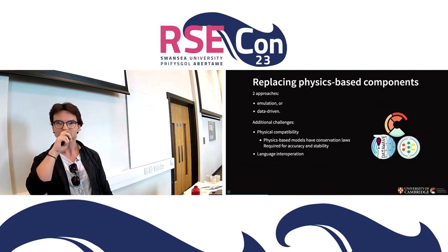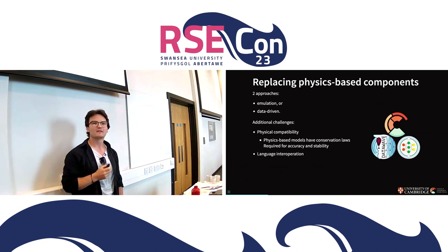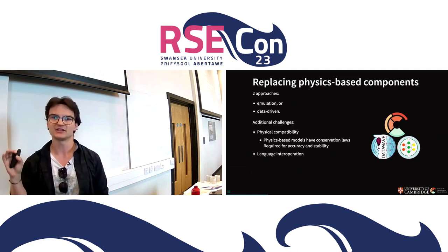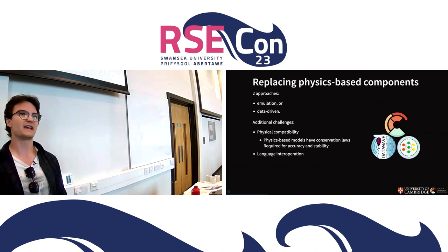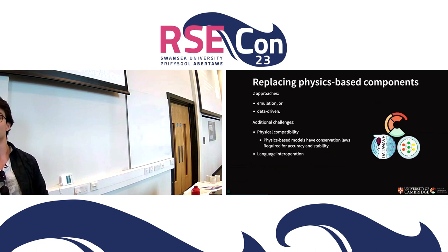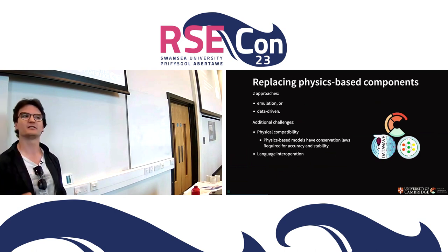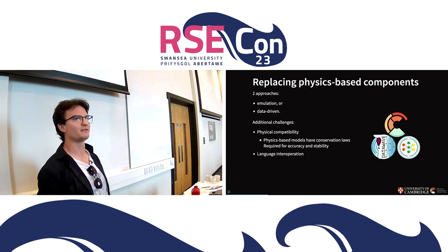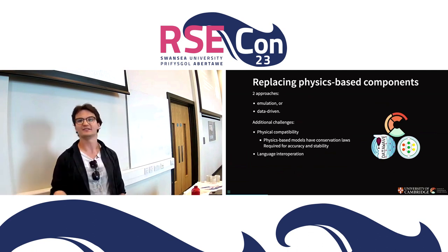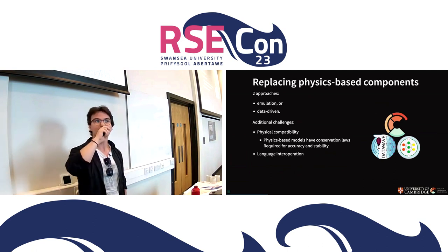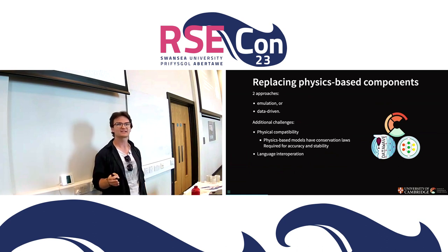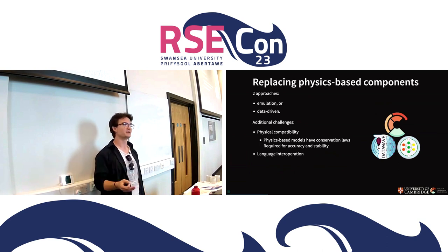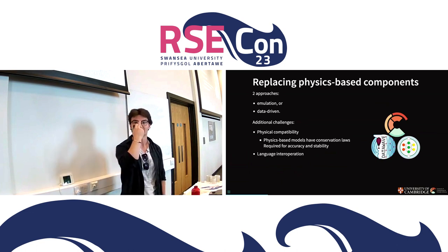That brings with it, alongside traditional machine learning challenges, a few extra ones we've spotted. When groups are trying to replace one particular component, there are often two things they're trying to do. Either they're trying to emulate an existing physics-based scheme — if we can take very heavy computation in, say, radiation or convection and code it into a neural net and run it much faster, we can run longer forecasts, more high-fidelity forecasts, more ensembles. The other approach is data-driven: physical models are imperfect, but if you learn from real-world data rather than a physics-based model, perhaps you can capture additional behavior.